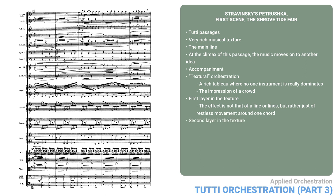Another layer of the texture is made up of the weaving 16th note figure in the violins, around the same notes as the horns, but an octave higher. To enrich the upper register, harps, celesta, and piano all do variations of the same idea. Note how harp 1 also has glissandos. Again, the point here is not to have everybody doing the same thing, but rather to vary the idea in the first violins to create a rich sense of movement.